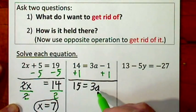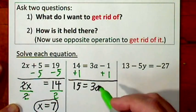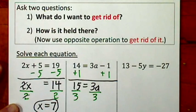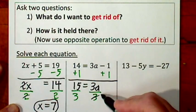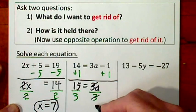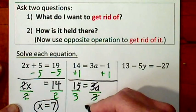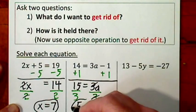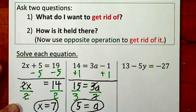And here we have 15. Still want a by itself. To get rid of the 3, I'll divide. 3 goes into 3 one time. So we have a equals 15 divided by 3 is 5. That's our solution.